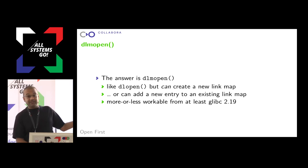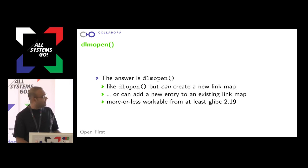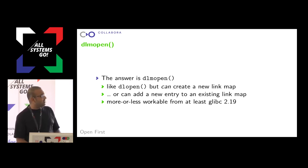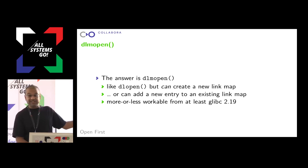The answer turns out to be dlmopen. This is a library call introduced in glibc around version 2.19. It sort of existed before then, but that's roughly the first version that works without immediately exploding in most cases. It's still a work in progress — patches are still being fed upstream — but from that version on it kind of works. It is like dlopen in that it adds a library to your link map after loading, but it can also create a new secondary or tertiary link map and add libraries to that instead. Sounds promising — it's basically what we ordered.